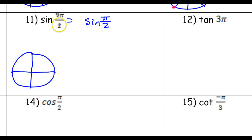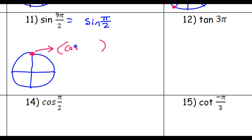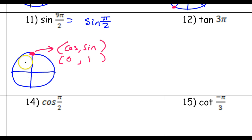We need to go to nine pi over two. Counting from the start, this would be one pi over two, two pi over two, three pi over two, four pi over two, five pi over two, six pi over two, seven pi over two, eight pi over two, nine pi over two — so nine pi over two would be right here. To know what the sine of this is, remember that every point is in the form cosine comma sine. We can just look at it and know the coordinates are zero comma one, because it's on the y-axis and it's up one on the unit circle. So the sine is one — that's the final answer.